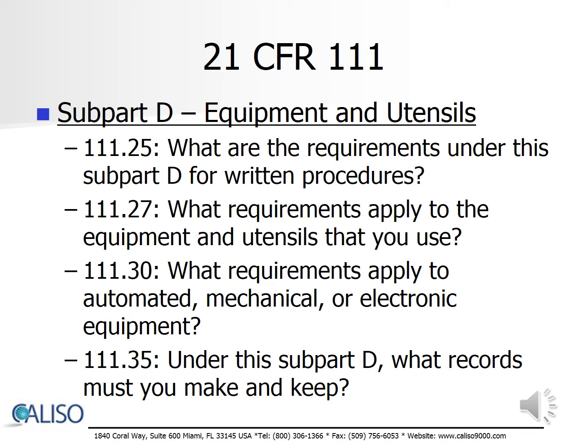Subpart D, Equipment and Utensils, outlines the requirements for using equipment and utensils that are of appropriate design, construction, and workmanship. All equipment and utensils must be installed and maintained to facilitate cleaning. Instruments and controls used in manufacturing or testing must be calibrated, and the equipment must be capable of operating satisfactorily within the operating limits required by the process.